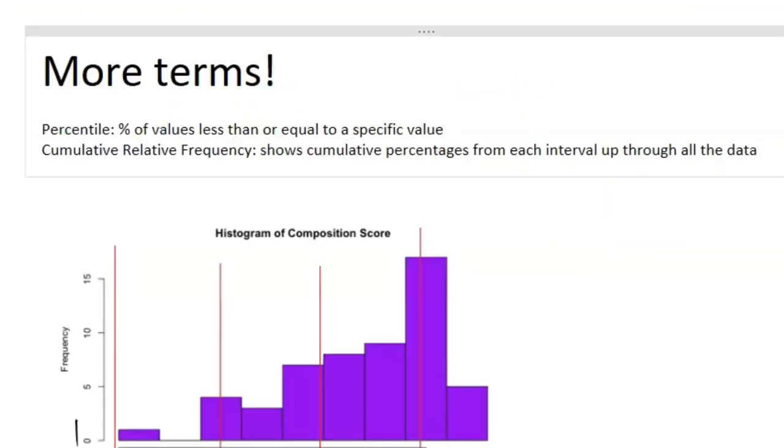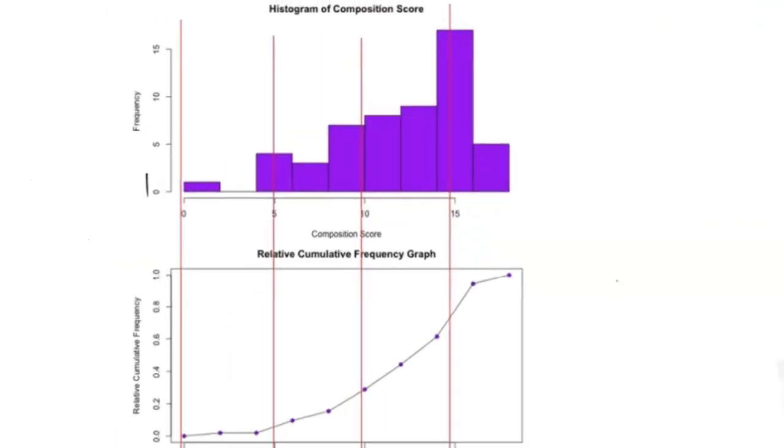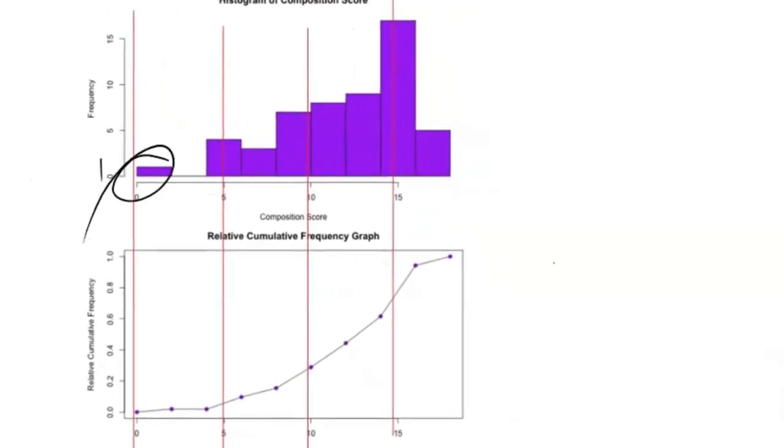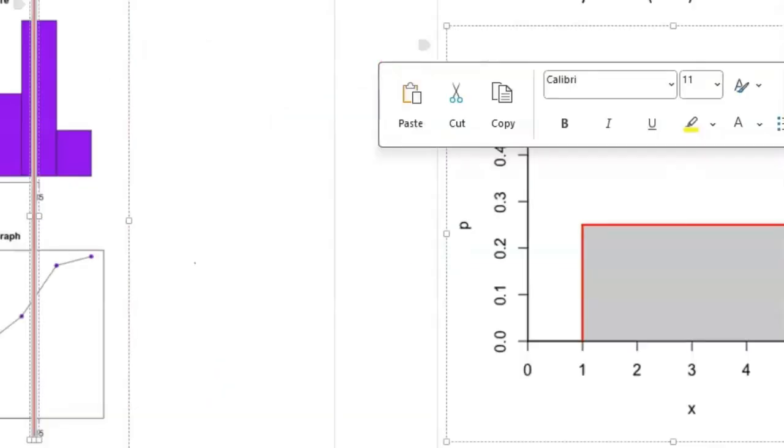To round off AP stat unit one, we have a couple more terms and then we'll get into normal distributions. The first is officially defined percentile - how I think you should think about it is the percentage of values that are less than or equal to a specific value. We also have cumulative relative frequency, which shows the cumulative percentages from each interval up through all the data. Here we have a visual. You can see here when we have a data point that is graphed, but when we don't have any data, that is just a straight plateau.